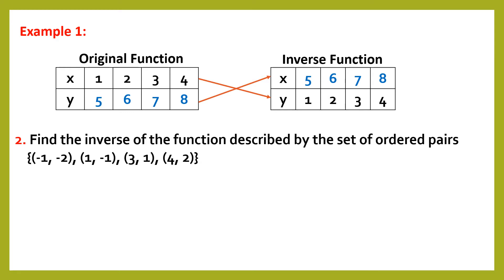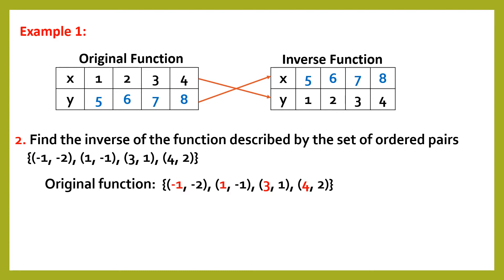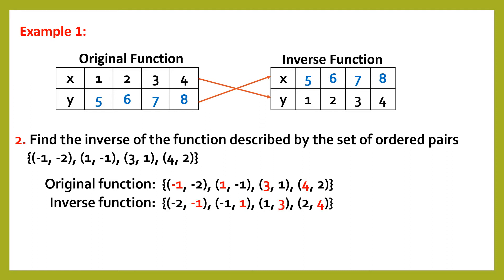Another example: find the inverse of the function described by the set of ordered pairs: (−1, −2), (1, −1), (3, 1), (4, 2). So we're going to get the inverse of this given set of ordered pairs — we reverse them all. The original function has (−1, −2), (1, −1), (3, 1), (4, 2). The inverse function becomes (−2, −1), (−1, 1), (1, 3), (2, 4). You'll notice that all the x-values became y-values and the y-values became x-values. These are the inverses of this set of ordered pairs.